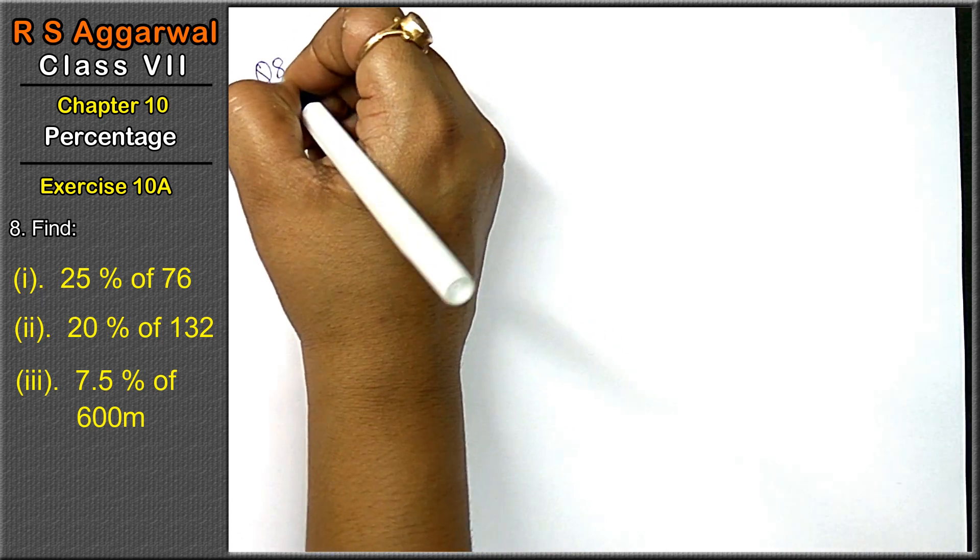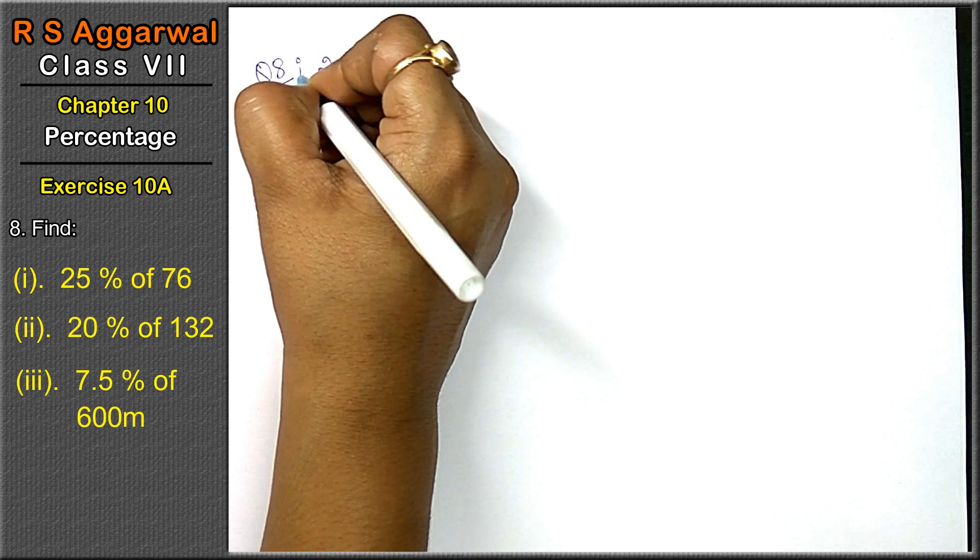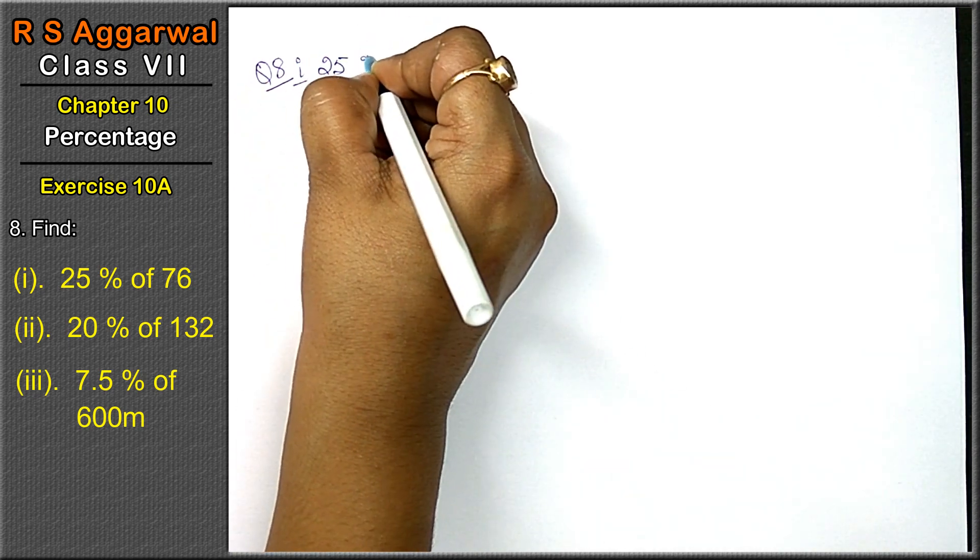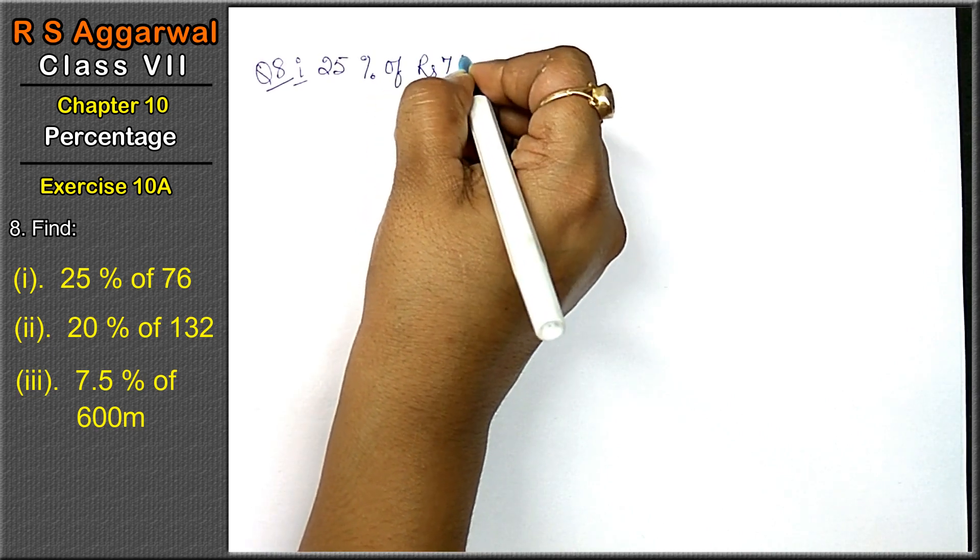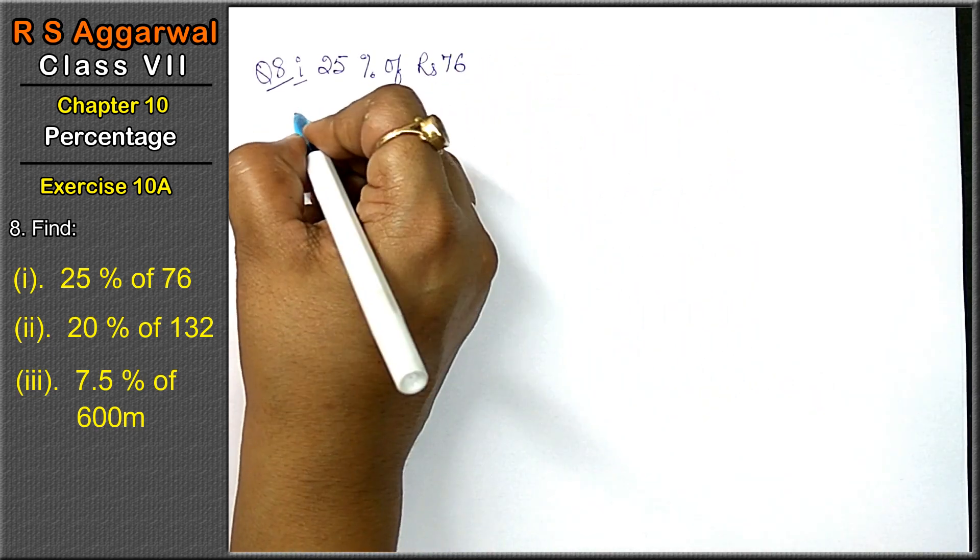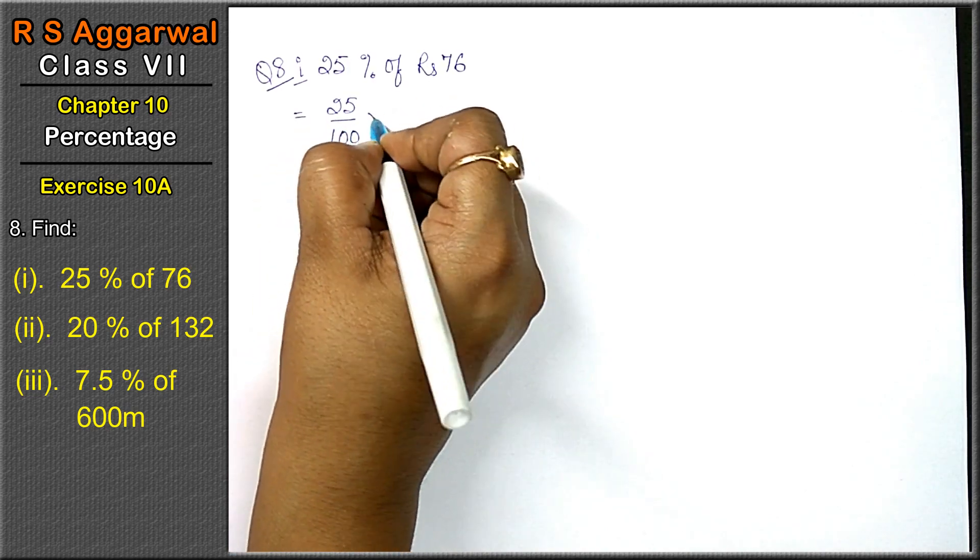Question number 8 is: find 25% of 76 rupees. Now 25% means 25 upon 100. 'Of' means multiply.